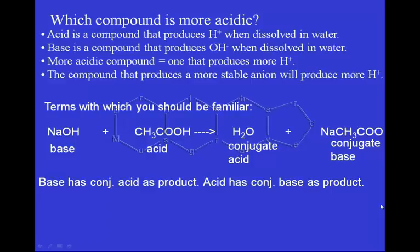There are a few terms I want you to be familiar with. We know something is a base because it forms OH- when dissolved in water, and an acid because it forms H+ when dissolved in water. A base will form a conjugate acid once it picks up an H+. An acid will form a conjugate base once it loses H+. Conjugate in this instance simply means partner.